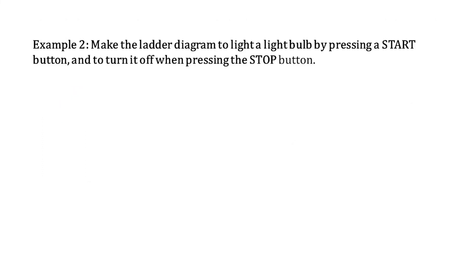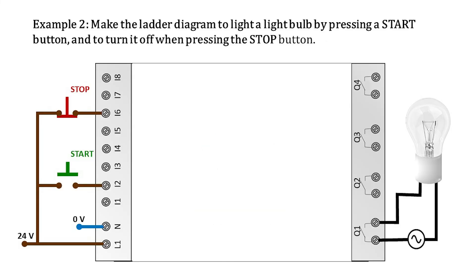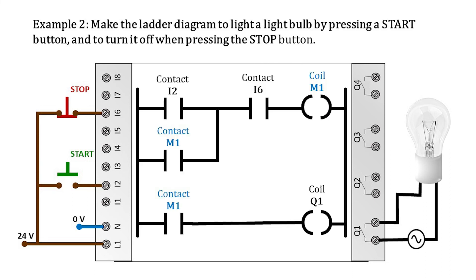Now let's see a second example: make the ladder diagram to turn on a light bulb when pressing a start button, and turn it off when pressing the stop button. The start button will be considered as normally open and the stop button as normally closed. The start button will be connected to input I2, the stop button to input I6, and the bulb to output Q1. This would be the ladder diagram for this example. Coil M1 and contacts M1 are memories, which are internal variables.